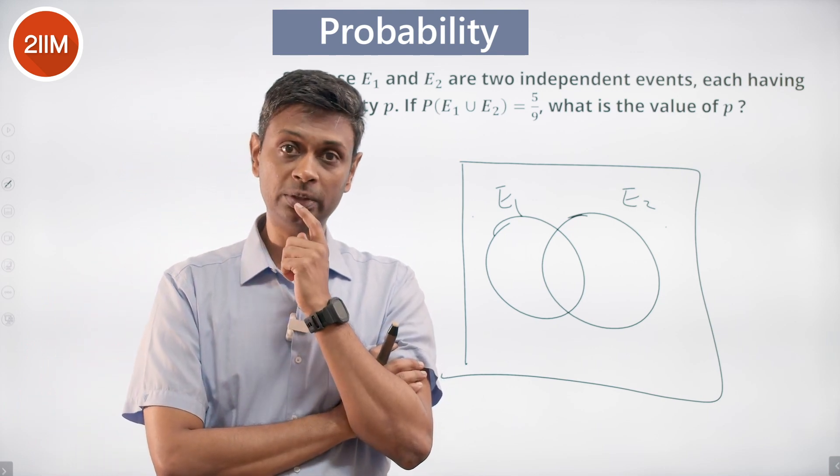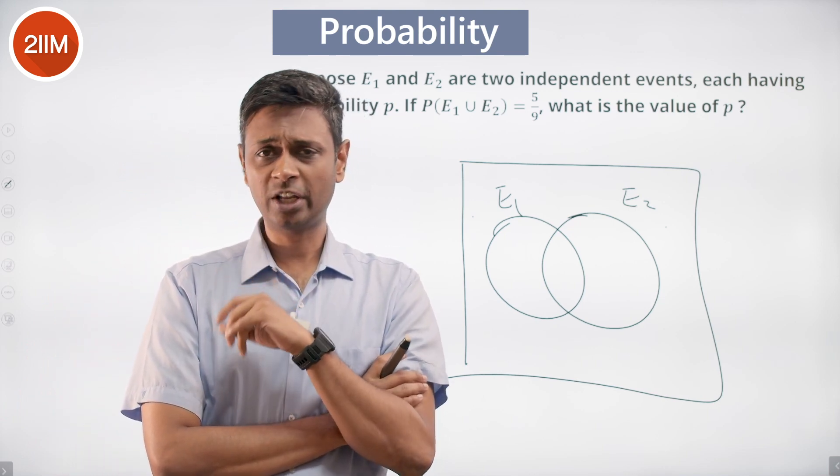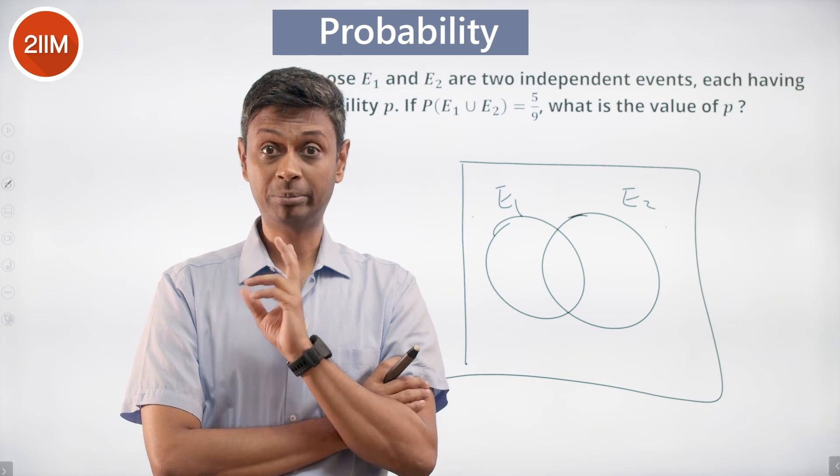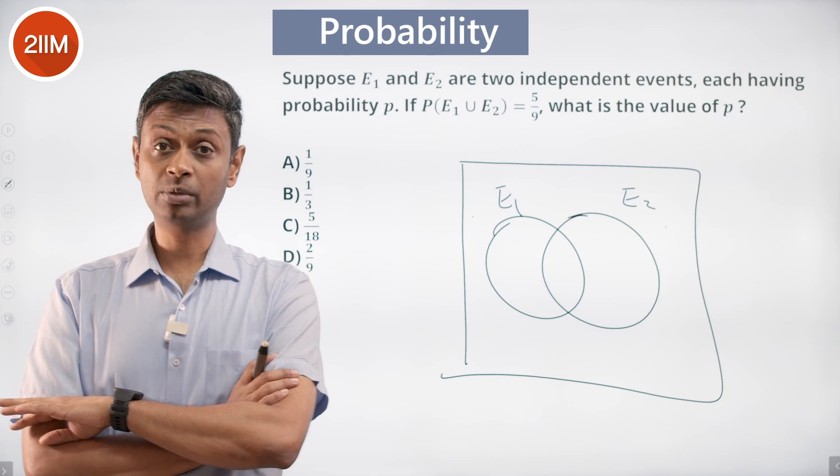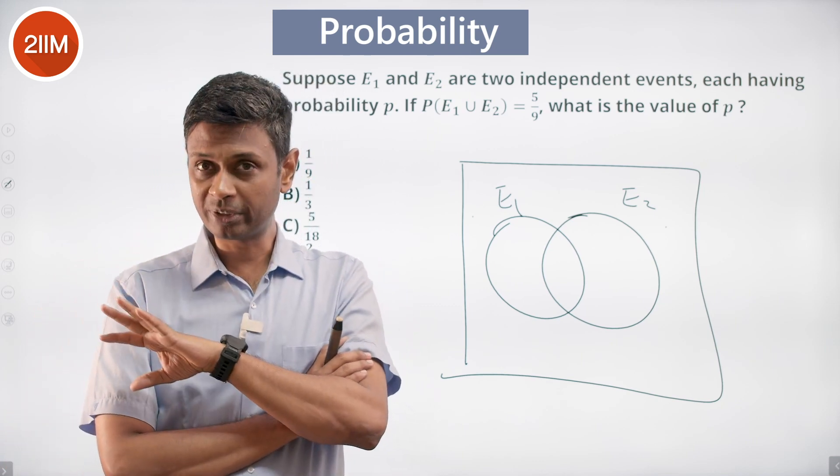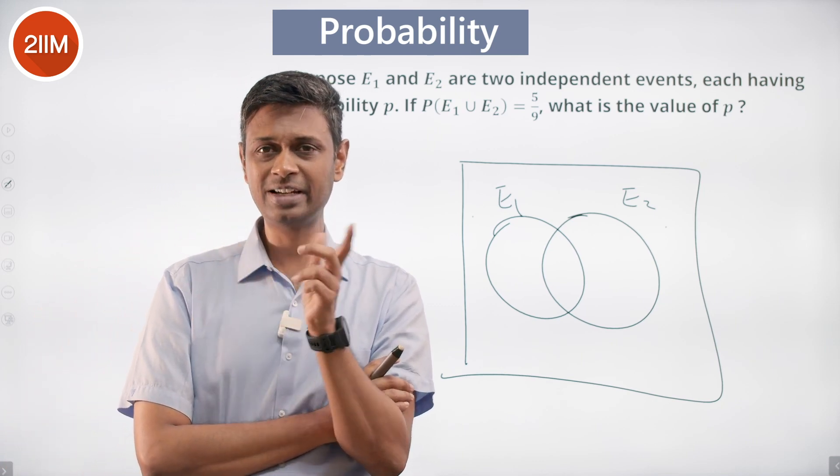If I toss a coin, probability of head is 1 by 2. If I roll a die, probability of number 3 coming is 1 by 6. What is the probability of getting a head and getting the number 3? 1 by 2 into 1 by 6. They are not linked events, they are independent events.